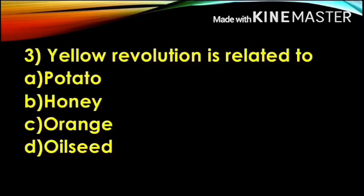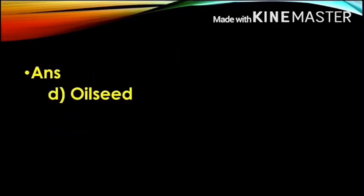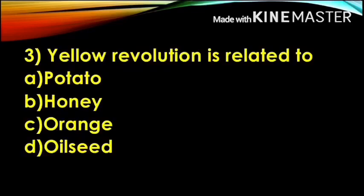Next question: Yellow Revolution is related to — Option A, potato; Option B, honey; Option C, orange; and Option D, oil seed. Yellow Revolution is related to oil seed. The correct answer is Option D, oil seed. Yellow Revolution is related to oil seed, which is also linked to White Revolution and Golden Revolution.